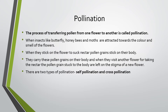So basically, what happens is that an insect sits on a plant, and the pollen grains stick to its body. Then when the insect visits another plant, the pollen grains stick to the stigma of that plant's flower - the pollen grains are transferred from one plant to another. This is called pollination. The process of pollination is of two types: self-pollination and cross-pollination.